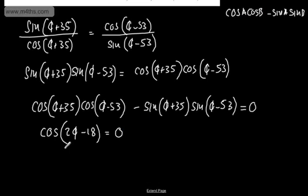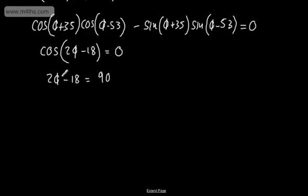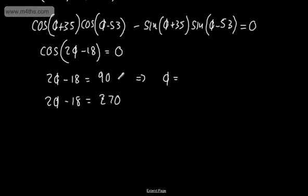Taking the inverse cosine of both sides, 2 theta minus 18 degrees equals 90 degrees — that's the principal value. Considering the cosine curve, 2 theta minus 18 also equals 270 degrees. Adding 18 to both sides and dividing by 2 for the first: theta equals 180 divided by 2, which is 54 degrees. For the second, theta gives us 144 degrees.